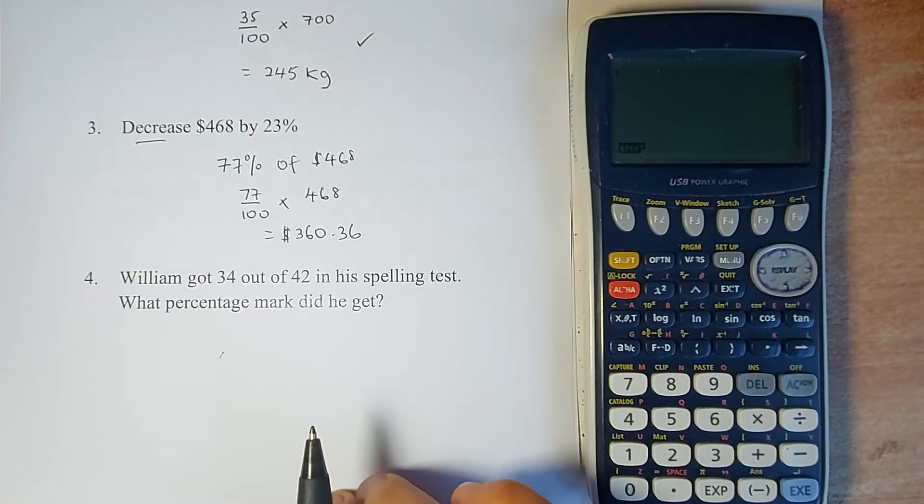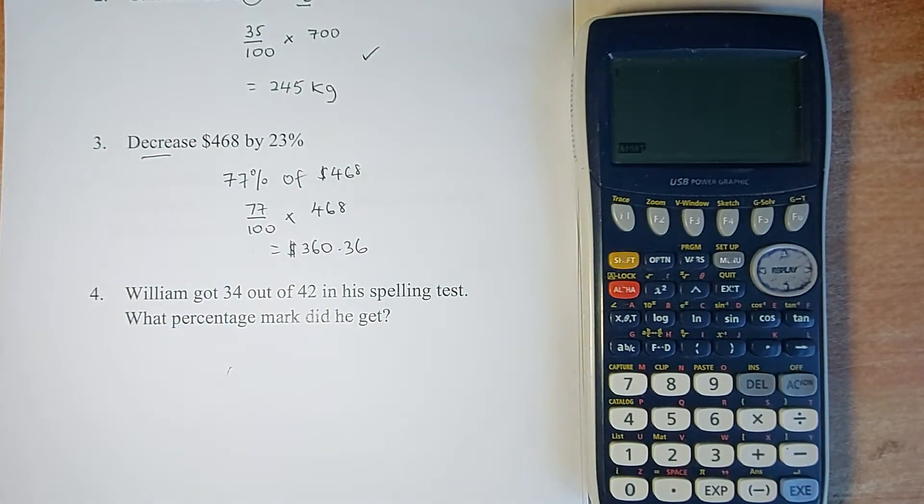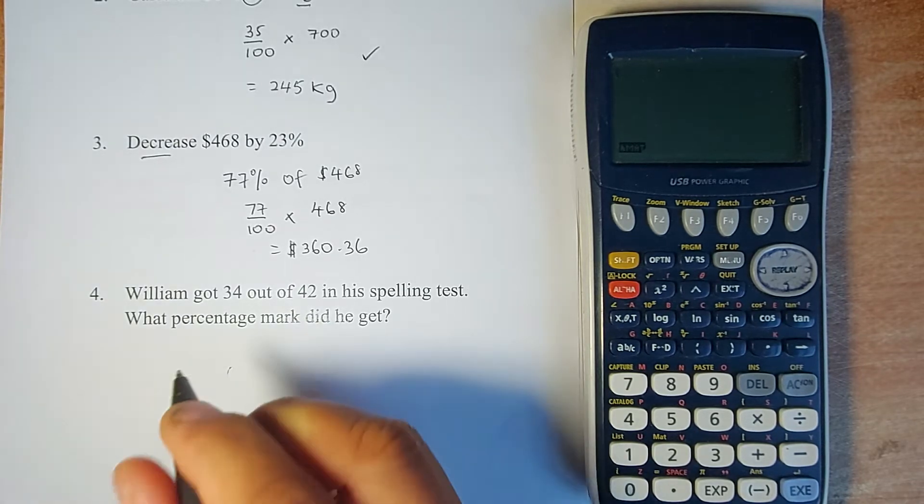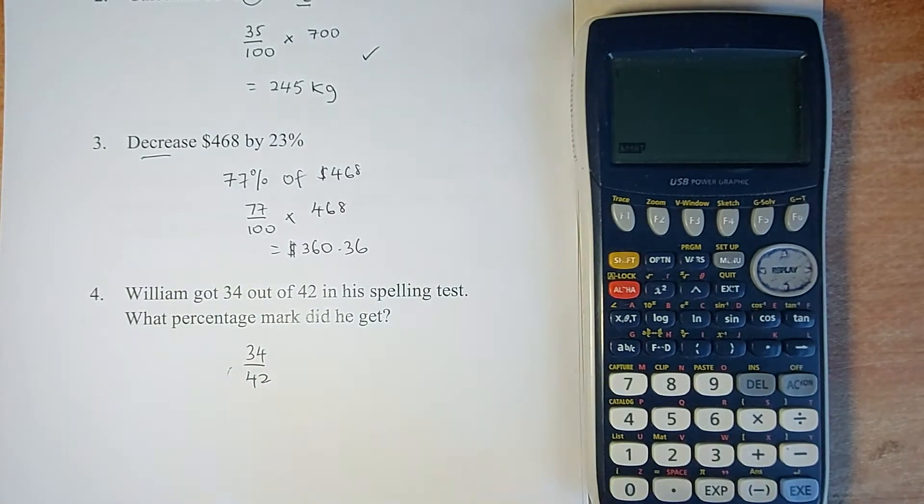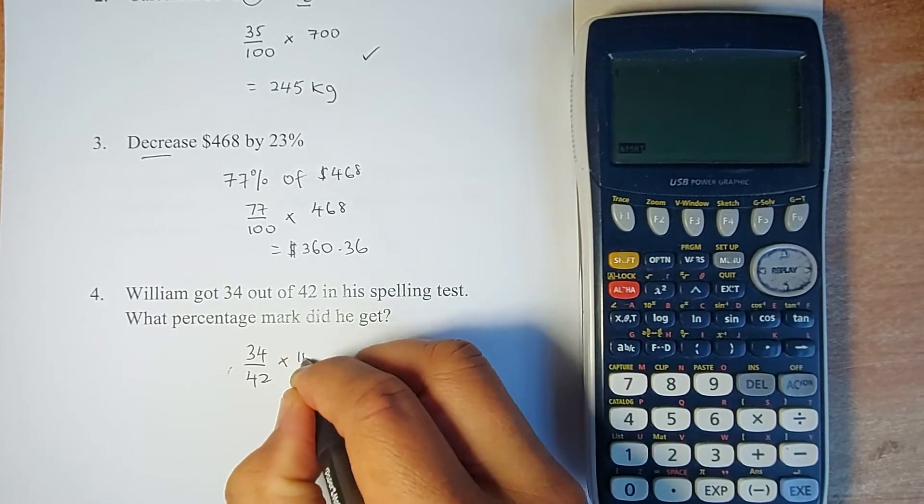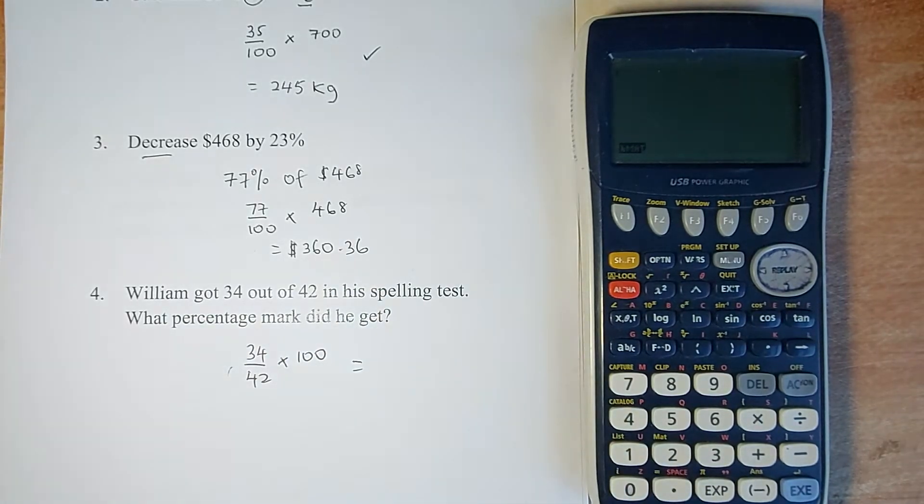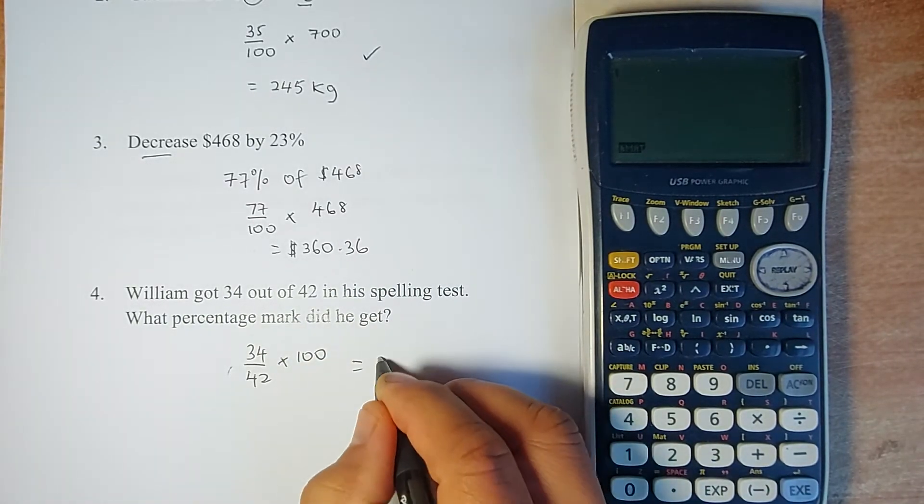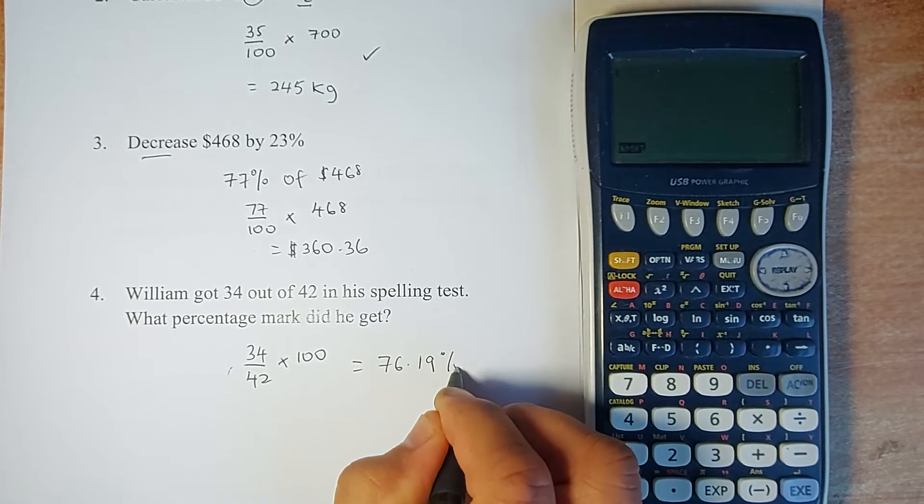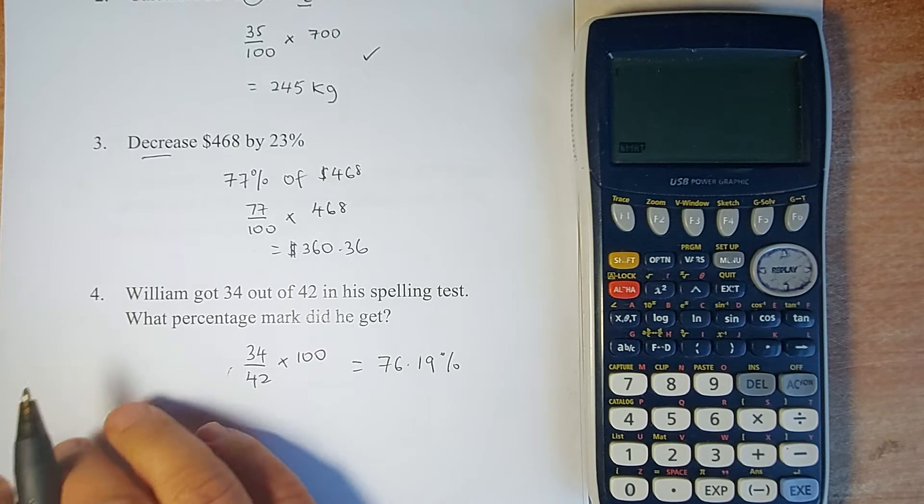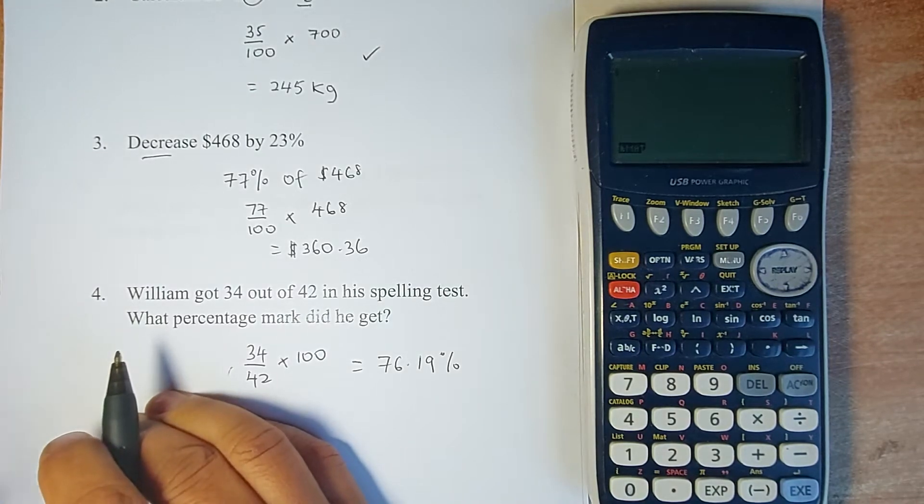Next: William got 34 out of 42 marks in his spelling test. What percentage mark did he get? So 34 out of 42, and to change to percentage you just multiply by 100. Put it in your calculator and the answer is 76.19%. Try using a calculator. If you don't know, ask your friend or teacher.